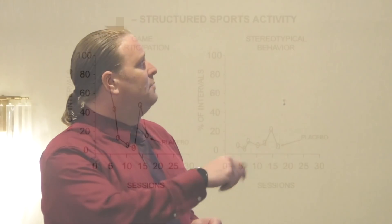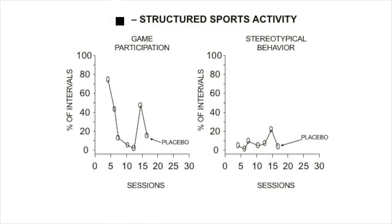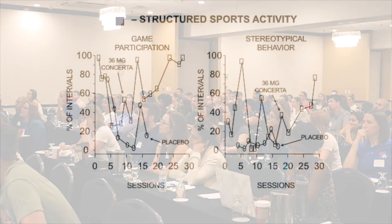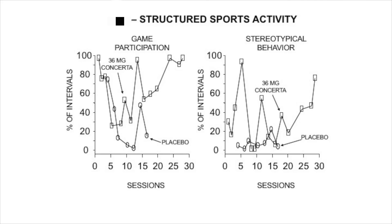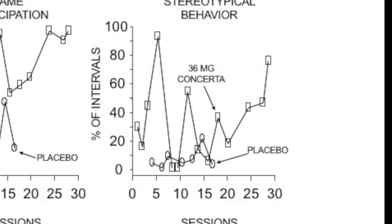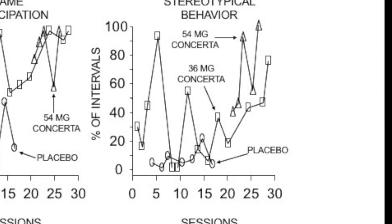So this is his kickball game. Game participation when he was on placebo — he was not participating a lot, not engaging in much stereotypical behavior. On the 36 milligram dose, a little bit better — he's paying attention, actually looking at the ball, not about to get beaned. Stereotypical behavior increases a little. On the 54 milligram dose, he's like a rock star — actually paying attention most of the time, but stereotypical behavior is through the roof.